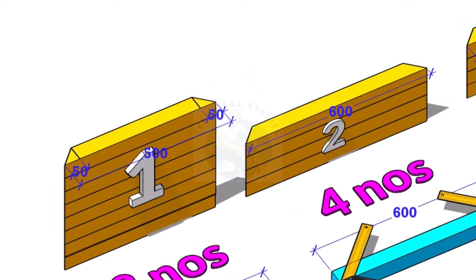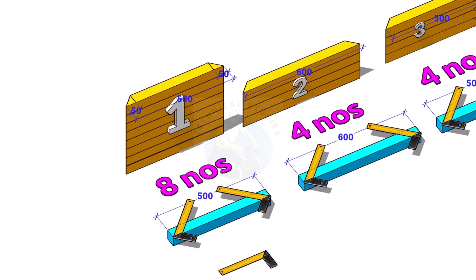Item number one is 500 millimeters long. Cut 45 degree notch on both ends as shown.